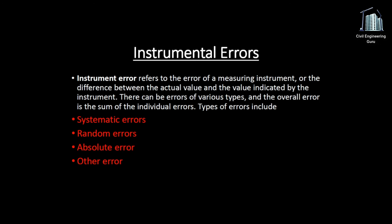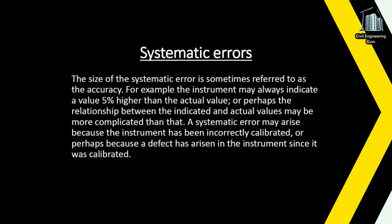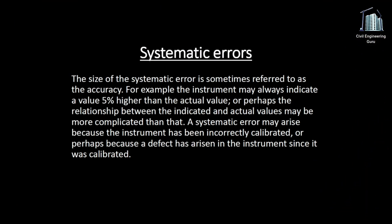The size of the systematic error is sometimes referred to as the accuracy. For example, the instrument may always indicate a value five percent higher than the actual value, or the relationship between the indicated and actual values may be more complicated. A systematic error may arise because the instrument has been incorrectly calibrated, or because a defect has arisen in the instrument since it was calibrated.